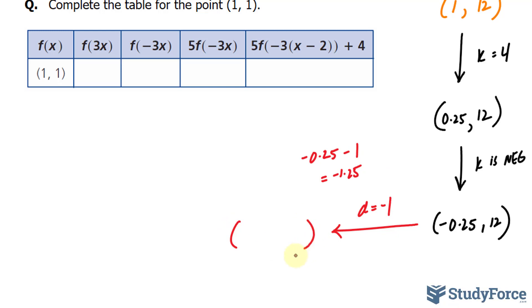Our transformation after applying d, therefore, should be negative 1.25 and 12. You may also write this as a fraction being negative 5 over 4. It's really up to you.